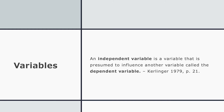Let's talk about dependent and independent variables — this is important for you to understand and remember. We just talked about smoking and lung cancer. If we ask the question, does smoking cause lung cancer, then smoking is the independent variable because it is presumed to affect the dependent variable, which is lung cancer. Kerlinger defined it this way: an independent variable is a variable that is presumed to influence another variable called the dependent variable.